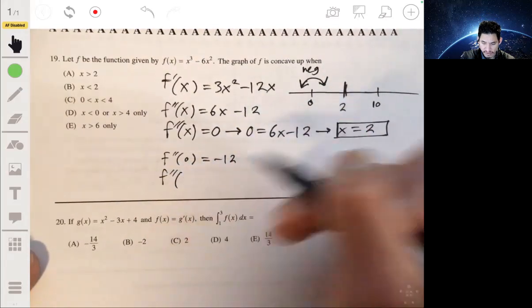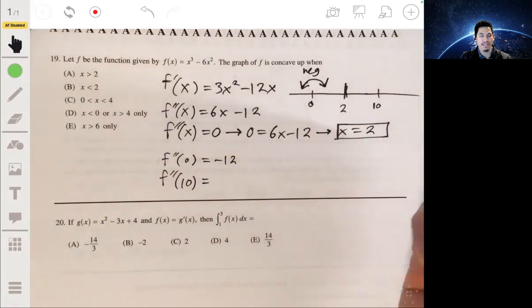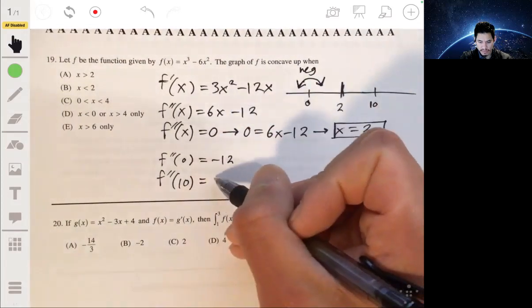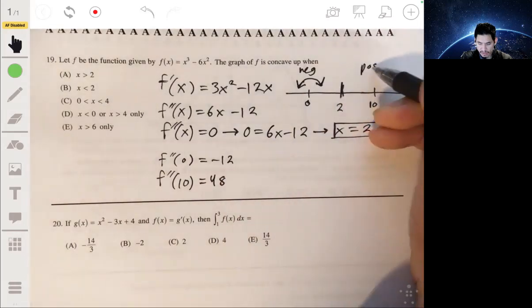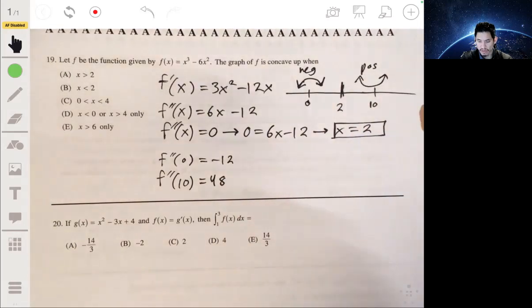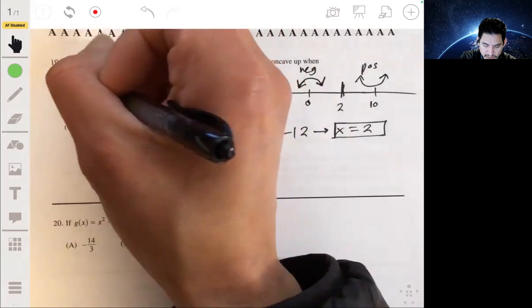Now we find the second derivative at 10. And I'm plugging in 10 because 10 is usually an easy number to work with. 60 minus 12, that's 48. So it's positive, and that means the graph is concave up after 2. So it's concave up for x is greater than 2. So the answer is A.